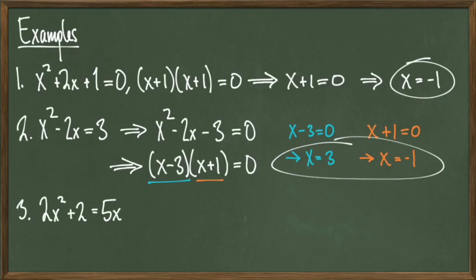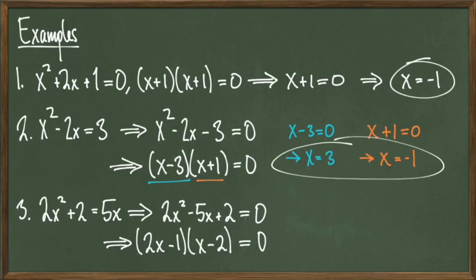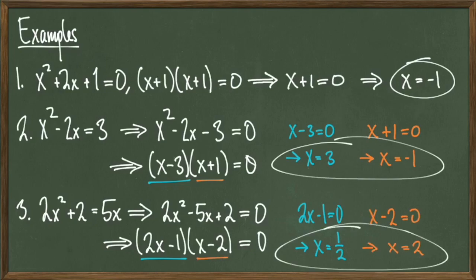For our third example, look at the quadratic equation 2x squared plus 2 equals 5x. Like above, we want everything on one side and 0 on the other, so subtract 5x from both sides to get 2x squared minus 5x plus 2 equals 0. This polynomial will factor into 2x minus 1 times x minus 2. Again, we have two linear equations to solve. The first is 2x minus 1 equals 0, which gives us x equals 1 half, and the second is x minus 2 equals 0, which gives us x equals 2.